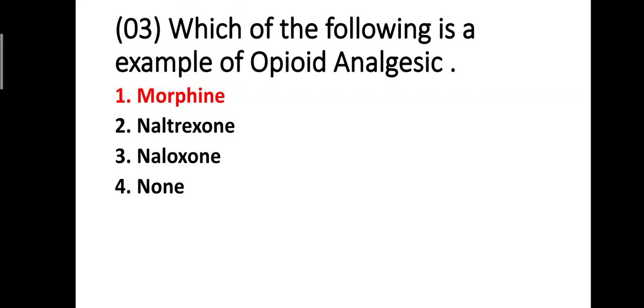Question three: which of the following is an example of an opiate analgesic? Option one: morphine, option two: naltrexone, option three: naloxone, option four: none of the above. The correct answer is morphine — morphine is the example of an opiate analgesic.